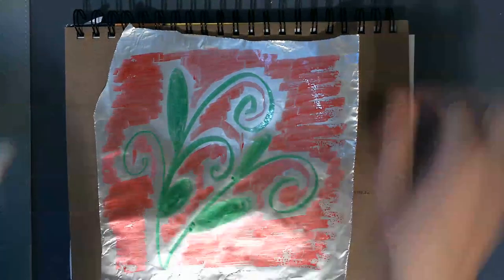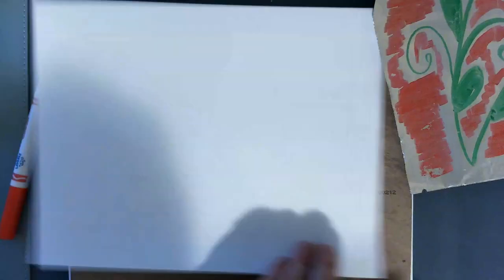Then you're going to set the foil aside, take your piece of paper, and you're going to need your damp paper towel. We want to get the paper pretty wet.